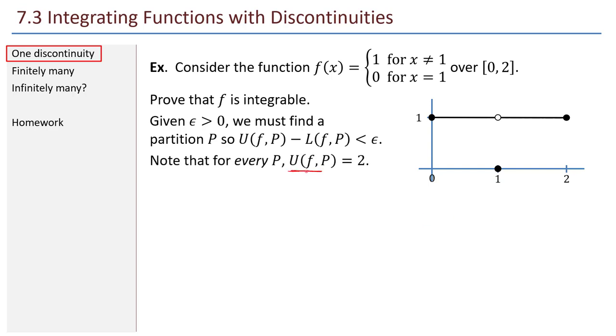First, we note that the upper sum for any partition is going to be 2. The upper sum is the summation k equals 1 to n of the maximum value of the function in the partition times the width of the partition, x_k minus x_{k-1}. In my interval, no matter what kind of partition I take, in every partition the highest value that I get will always be 1. So this capital M just becomes 1, and I'm left with the sum of the widths. The sum of all the widths will give me 2 altogether. This is why for every partition P, the upper sum is always 2.